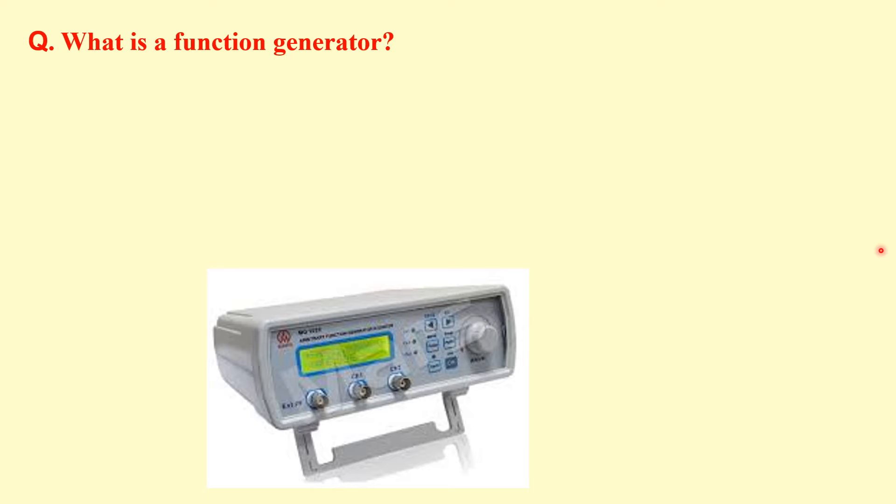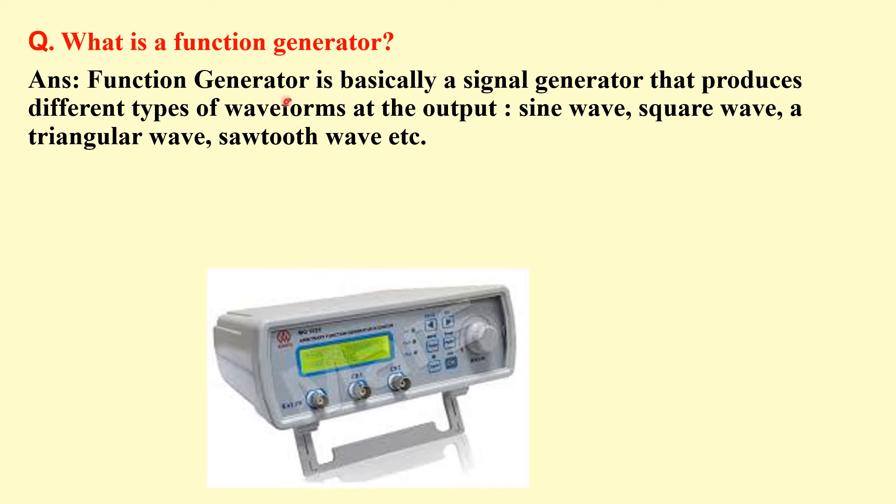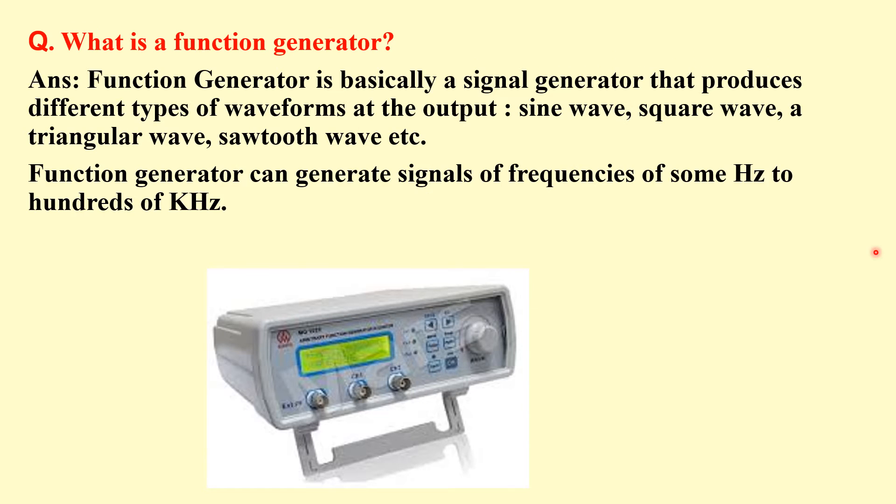What is a function generator? Function generator is a signal generator that produces different types of waveforms at the output like sine wave, square wave, triangular wave, sawtooth wave. And it can generate frequencies in a wide range from few hertz to 100 of kilohertz.